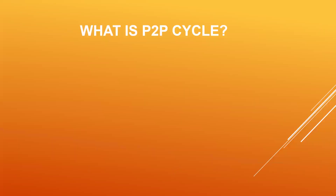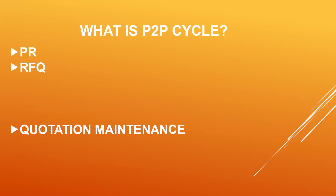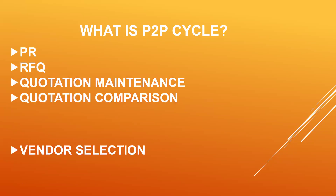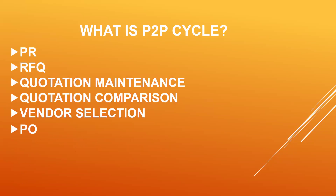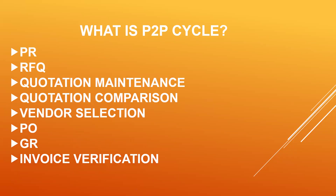The first question: what is the procure-to-pay cycle? Your answer should be: the procure-to-pay cycle starts with purchase requisition and ends with invoice verification and accounts payable. The steps are: purchase requisition, request for quotation, quotation maintenance, quotation comparison, vendor selection, purchase order creation, goods receipt, and invoice verification, and finally accounts payable.